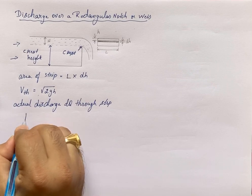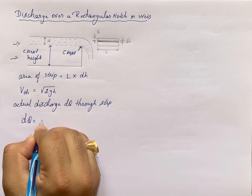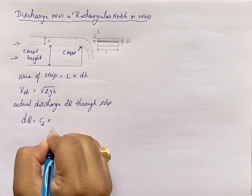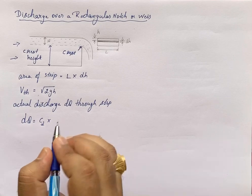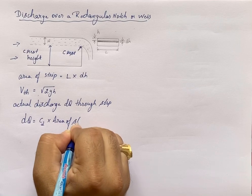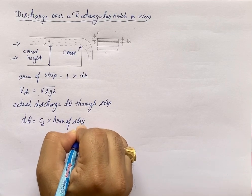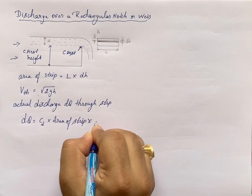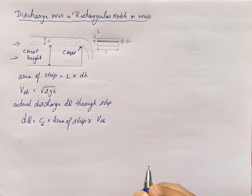dQ equals Cd times area of strip times theoretical velocity.